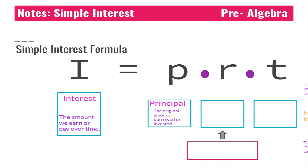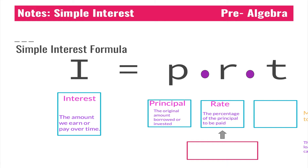Then we have R, which stands for rate. Rate is the percentage of the principal to be paid, and in order to use this in our formula we need to make sure that we convert this to a decimal. It's usually shown as a percent, and we need to make sure that we convert it to a decimal whenever we want to use it in our formula.